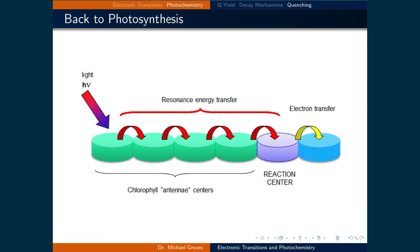Now that we've examined these quenching processes, let's look at an example which uses them: photosynthesis. Antenna pigments are used to harvest light from the sun, and fluorescence resonance energy transfer moves that energy to the reaction center. In the reaction center, the mechanism that converts carbon dioxide and water into sugar and oxygen involves two electron transfer processes initiated by the energy harvested by the antenna pigments. Being able to describe quenching processes enables our ability to quantify important biological processes such as this.